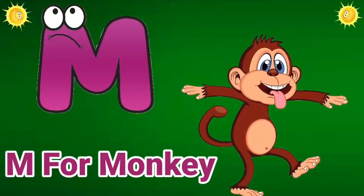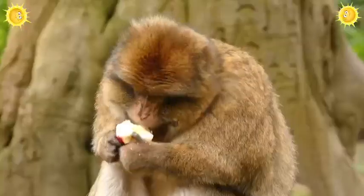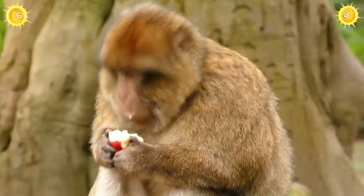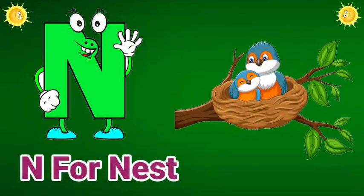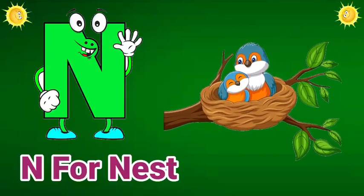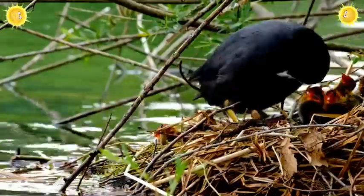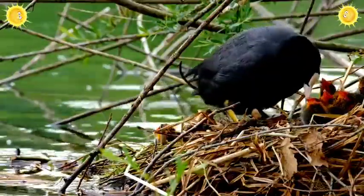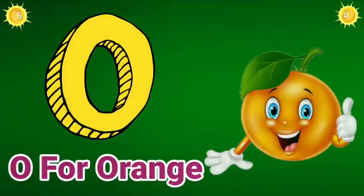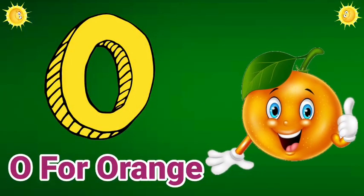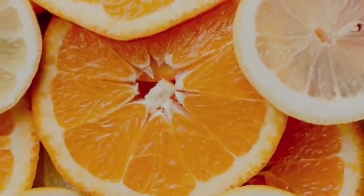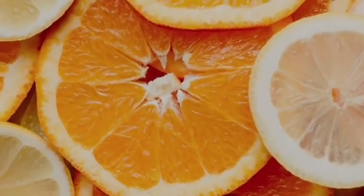M for monkey. Monkey means mandar. N for nest. Nest means ghosla. O for orange. Orange means kantra.